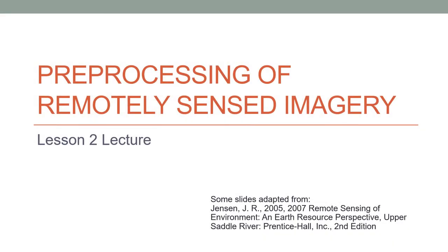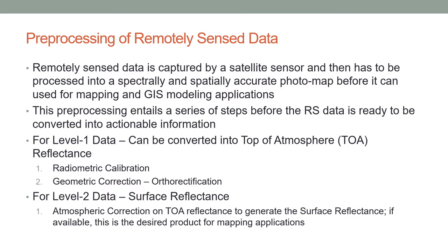This is the Lesson 2 instructor lecture, and we will have a focus on pre-processing of remotely sensed imagery. Remotely sensed data is captured by a satellite sensor, and then it has to be processed into a spectrally and spatially accurate photo map before it can be used for mapping and GIS modeling applications. This pre-processing entails a series of steps before the remotely sensed data is ready to be converted into actionable information.